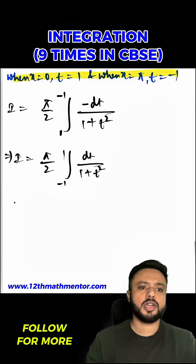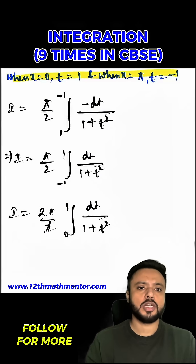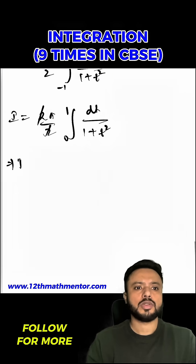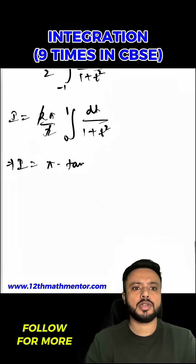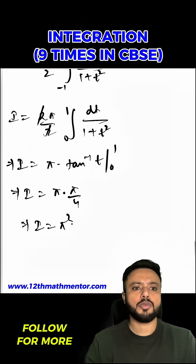Since 1/(1 plus t²) is an even function, I can use the definite integral property to write this as I equals 2π/2 times the integral from 0 to 1 of dt over (1 plus t²). The 2's cancel, so I equals π times [tan⁻¹(t)] from 0 to 1, which gives π times π/4, so the answer is π²/4.